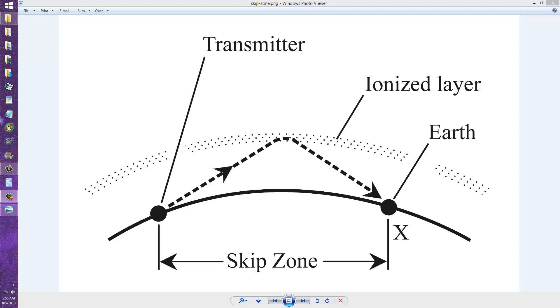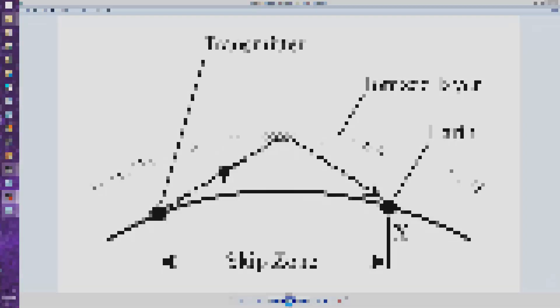Stan Gibalisco, W1GV, Whiskey 1, Good Vibrations, saying 73, and so long, which, whether a station is in the skip zone or not, whatever the maximum usable frequency, whatever the band, always translates to da-da-da-da-da.